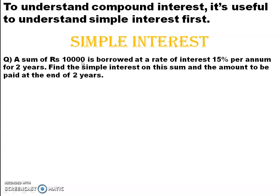For how long? For 2 years. That means he will repay the amount after 2 years. So what is the extra amount he has to pay? It is 15% of 10,000 for 2 years. Let's see what is the data given in the question.